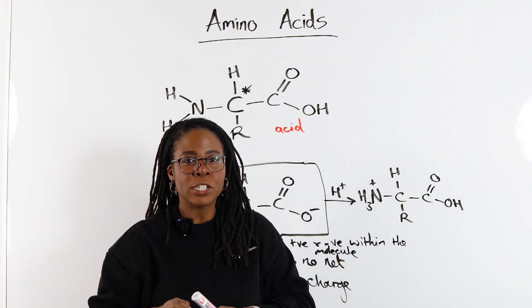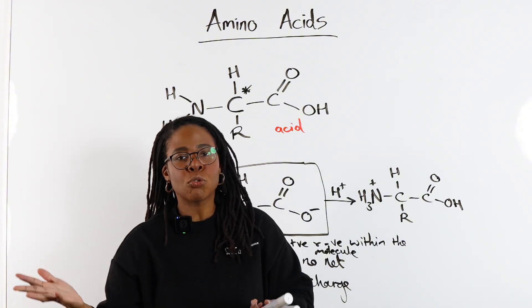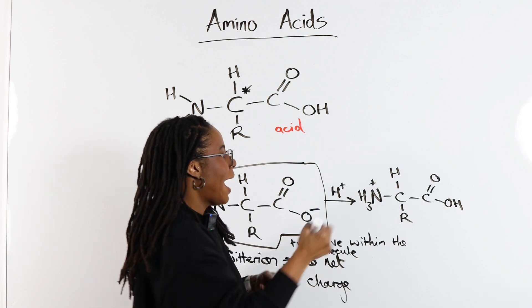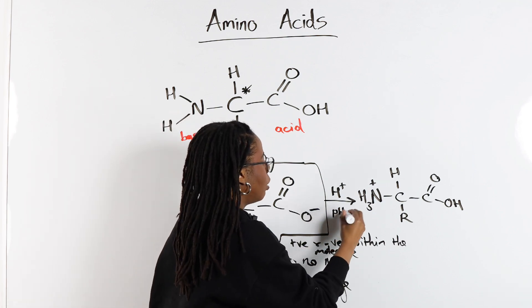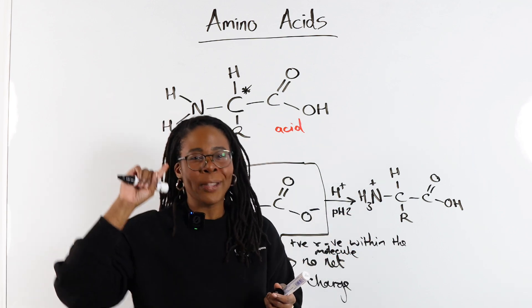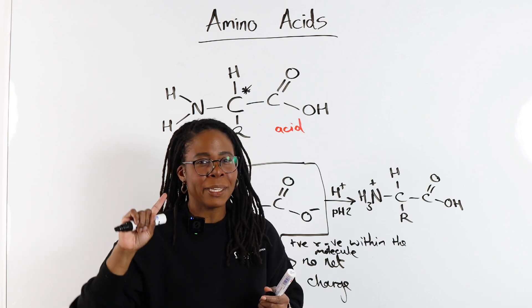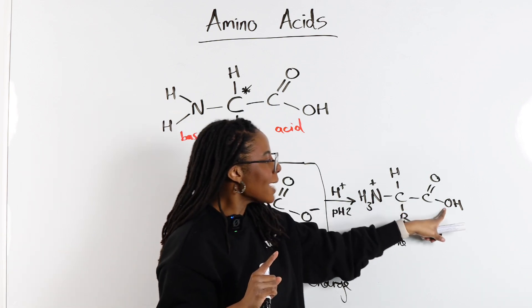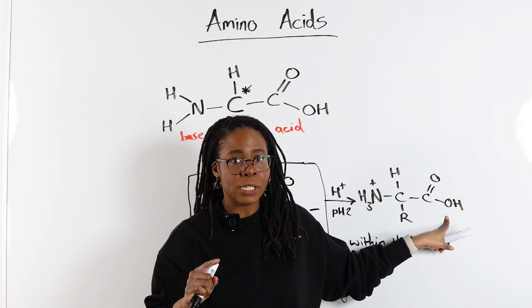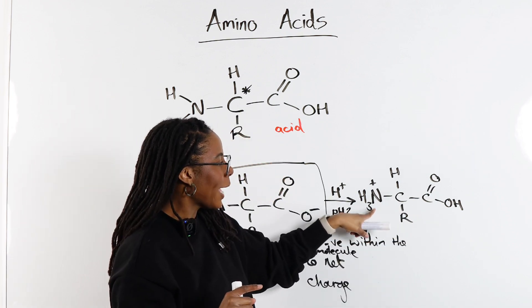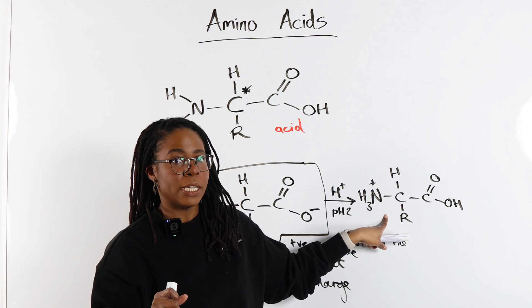Common types of exam questions that you'll see, they might say draw the structure of this particular amino acid at pH 2. And then you know, okay, pH 2, that's an acidic pH, therefore my acid group is not going to be deprotonated because we're in acid, and our base group, the amine group, is going to be protonated.